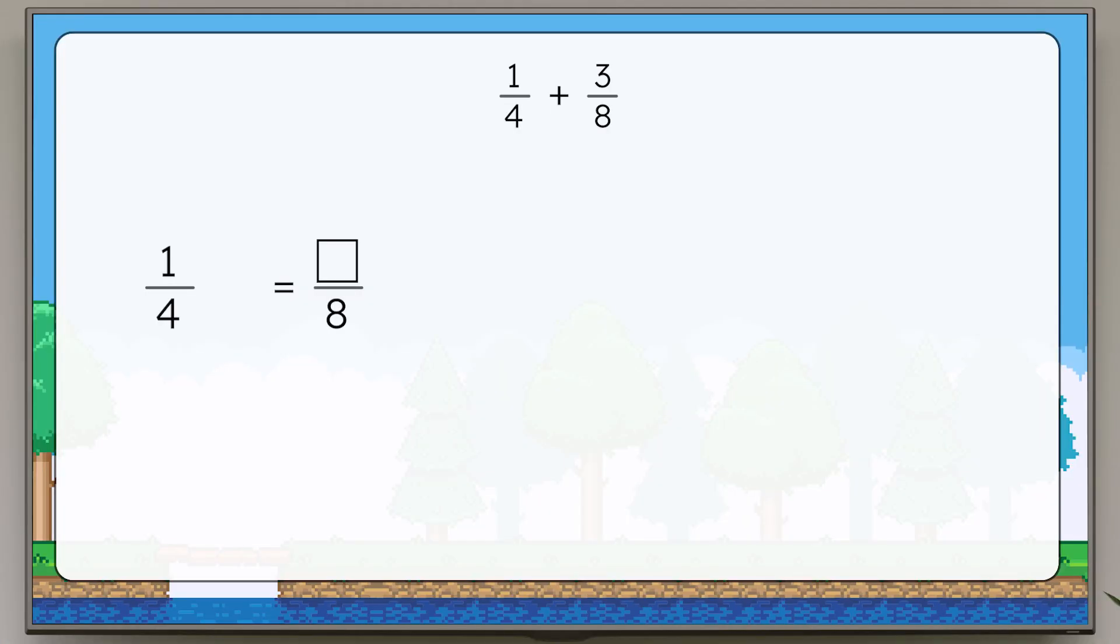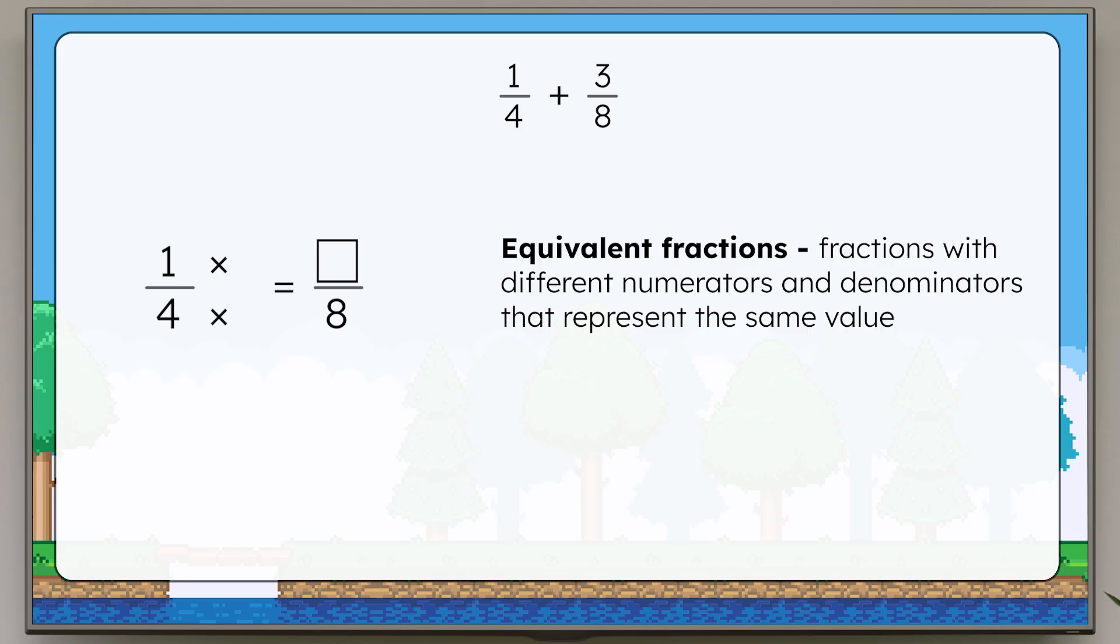Yes. Since eight is a multiple of four, we can multiply to find an equivalent fraction. When finding equivalent fractions, we need to do the same thing to the numerator that we do to the denominator. Four times two equals eight, and one times two equals two, which means one-fourth is equivalent to two-eighths.